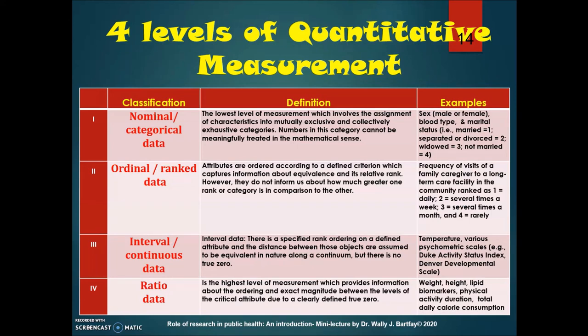Here we see a table depicting the four levels of quantitative measurement. Each level — from nominal up to ratio — has a different set of statistical procedures. Nominal is the lowest level of measurement, involving the assignment of characteristics into mutually exclusive and collectively exhaustive categories. Numbers in this category do not have meaningful numeric value. Examples include sex (male or female), blood types, and marital status, where married equals one, separated or divorced equals two, widowed equals three, and not married equals four.